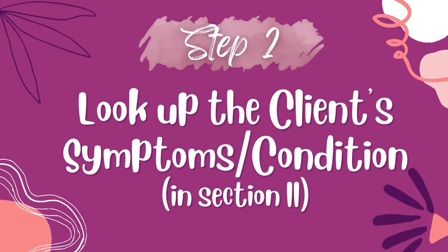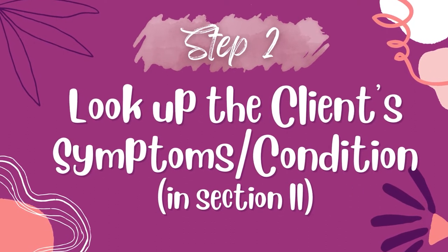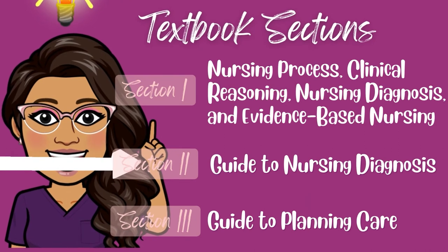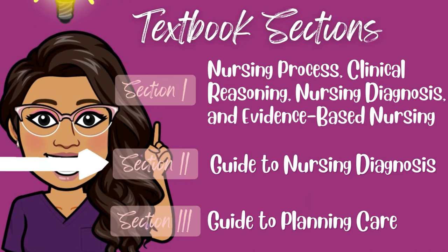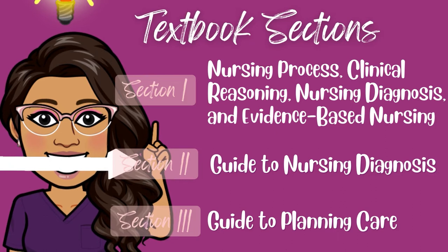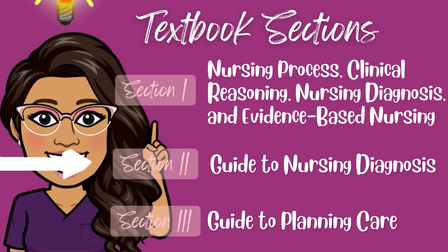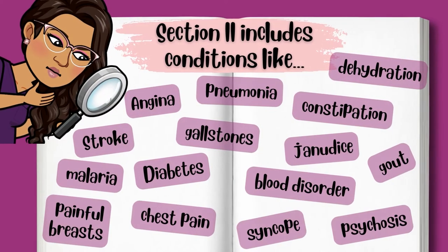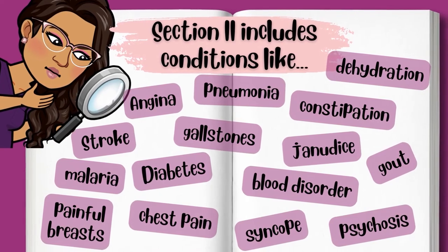Step number two: look up the symptoms and the condition in section two of the textbook. Remember what section two is called? It's called 'Guide to Nursing Diagnosis.' So we don't have to have our nursing diagnosis yet — we're getting close. We're going to use section two specifically to help us do that. I love section two because you can literally think of any medical diagnosis, condition, or symptom that your client has and see all the possible nursing diagnoses you could choose from that apply to that condition.